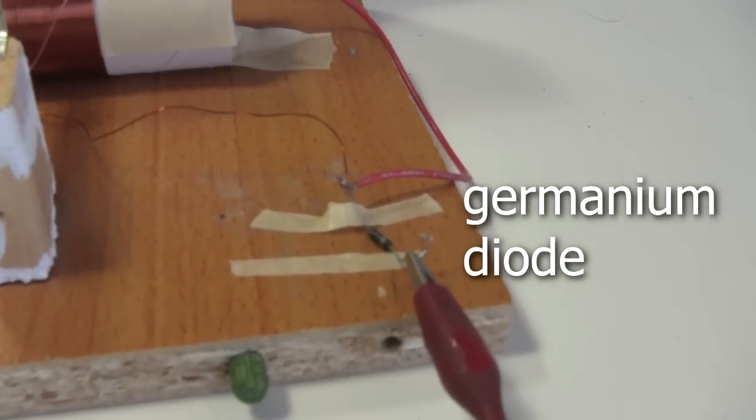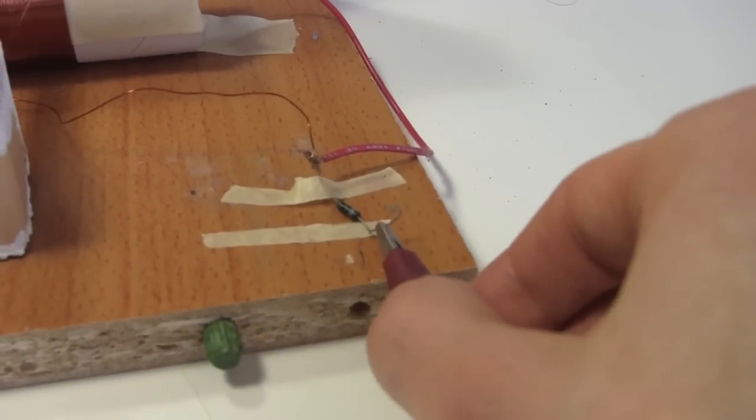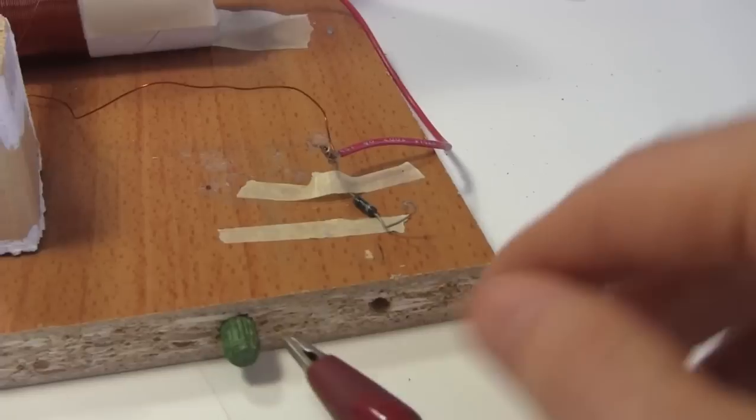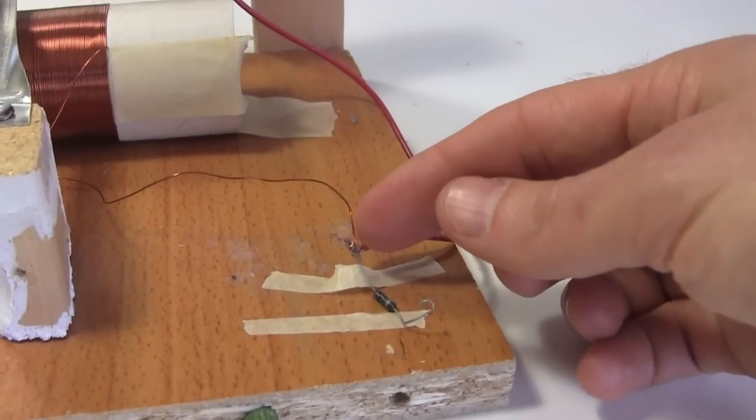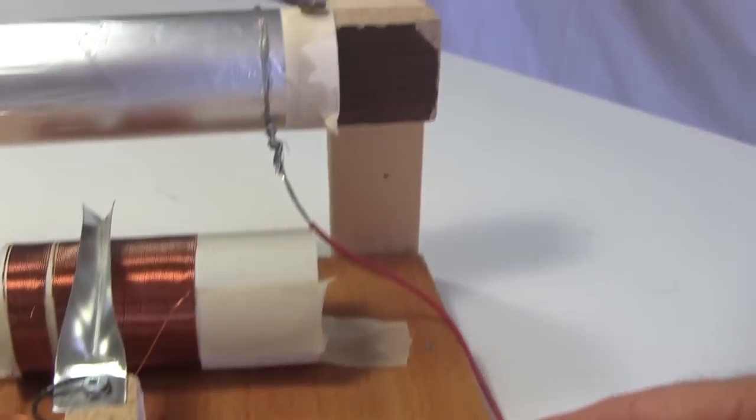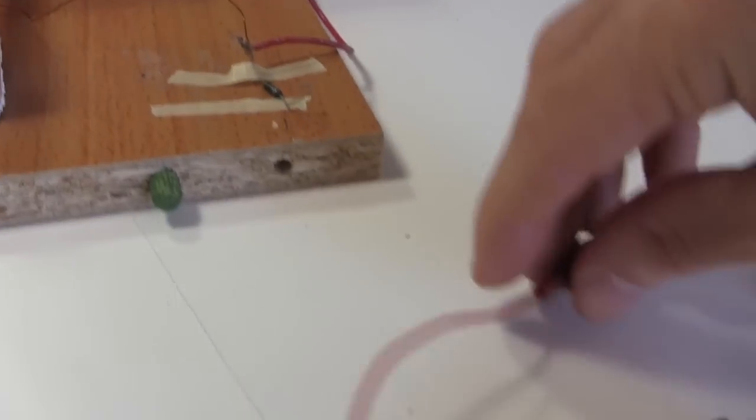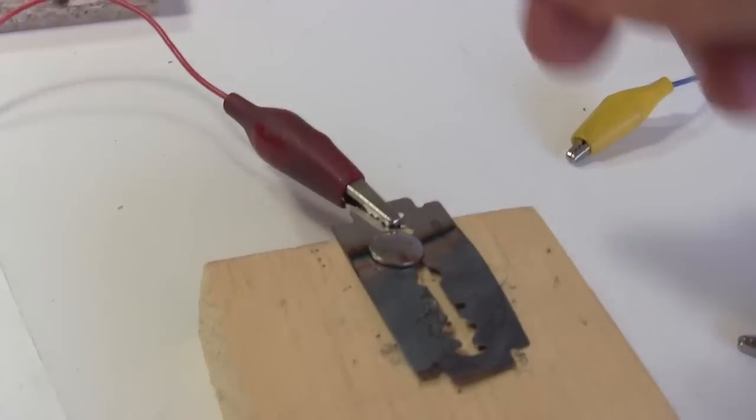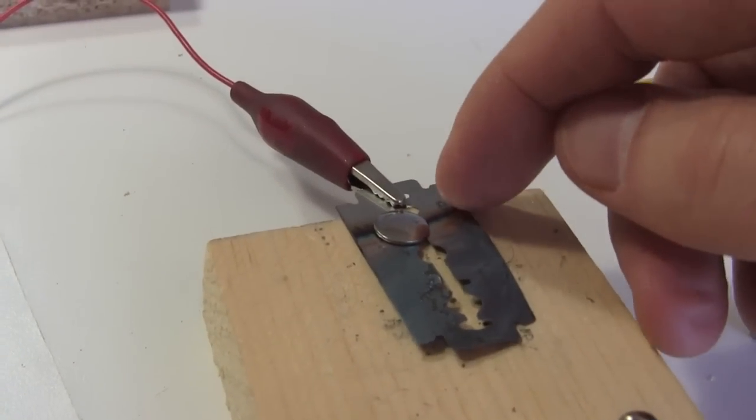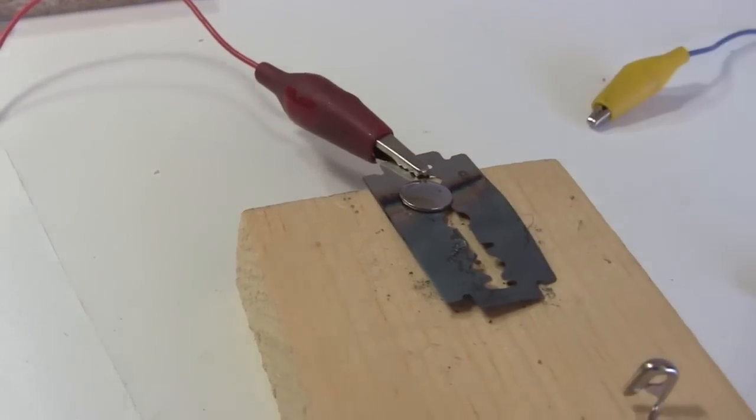And right here is a germanium diode that I want to stop using. So I'll take it out of the circuit. Just disconnecting one end is good enough to remove it from the circuit. These are the wires going to the coil and up to the capacitor. I'll take that wire and instead I'll connect it to the razor blade diode right here. Notice I'm connecting it to the bare end, the part that's not blued at all.